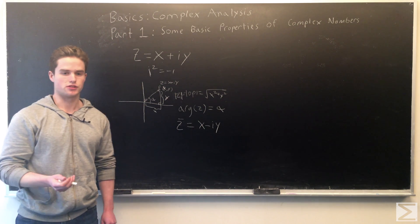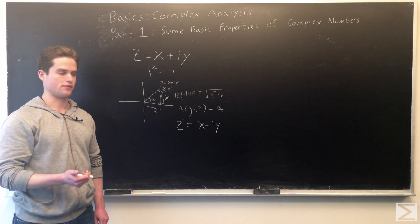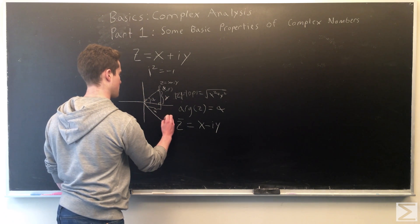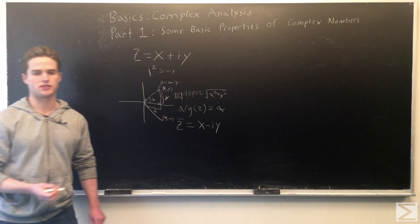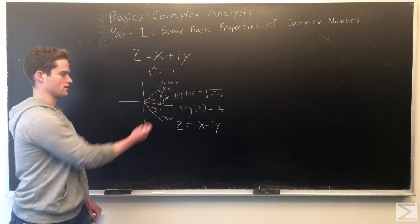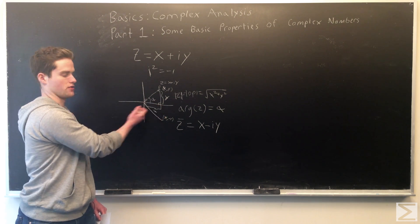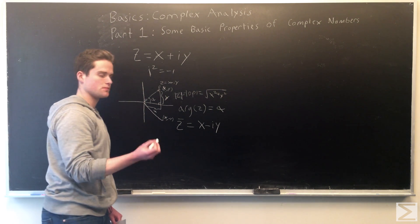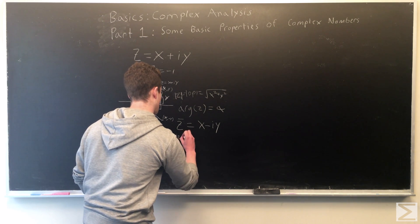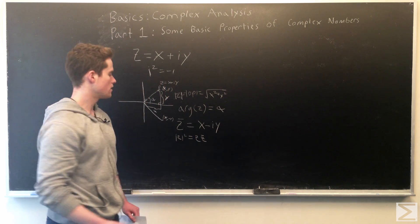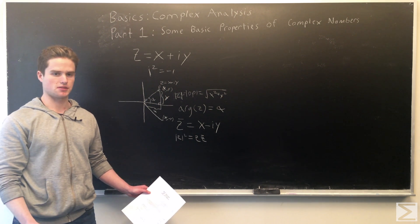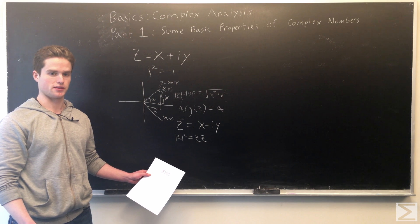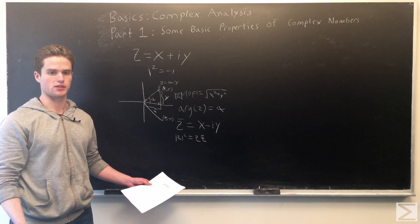One other thing we can do with an arbitrary complex number is define its conjugate. For its conjugate, you just take the complex part and make it negative, so x minus iy. We can imagine it in the complex plane as simply reflecting over the x-axis. Also note that the conjugate times the original complex number gives you the modulus squared — it gives you x squared plus y squared.